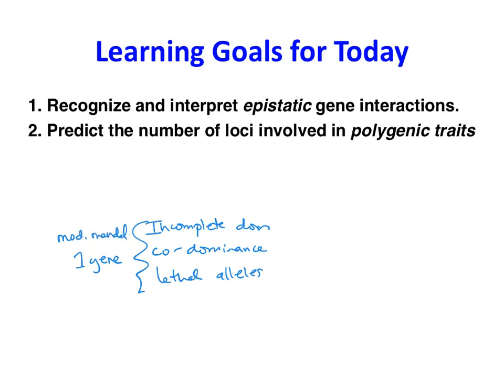Today, we're going to talk about epistatic gene interactions, which are two genes with modified Mendelian — not really inheritance, but sort of manifestation in their phenotype. I also have a separate video posted on Moodle about polygenic traits, so we're going to be focusing on epistatic gene interactions here.